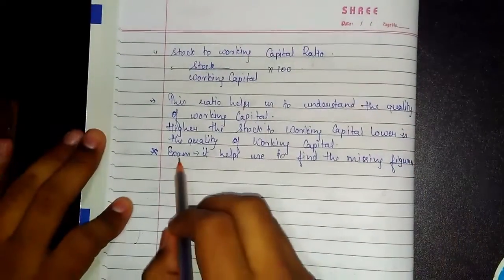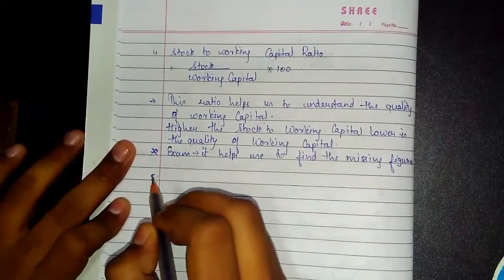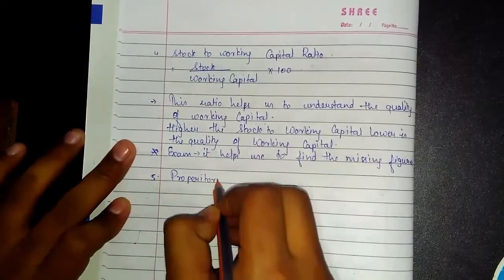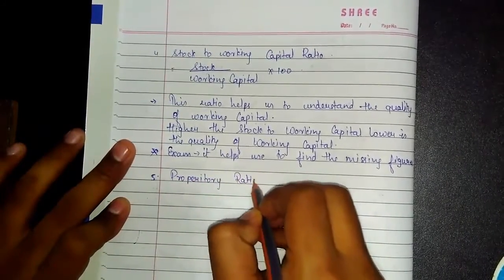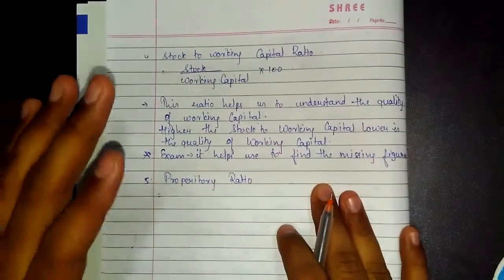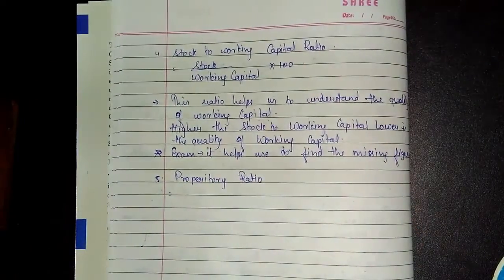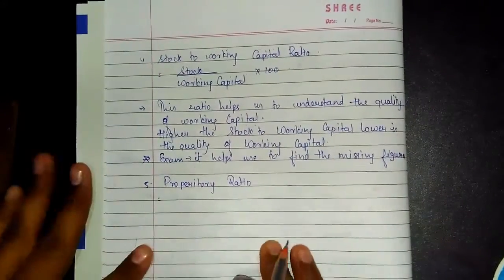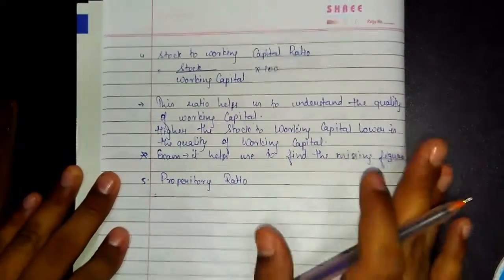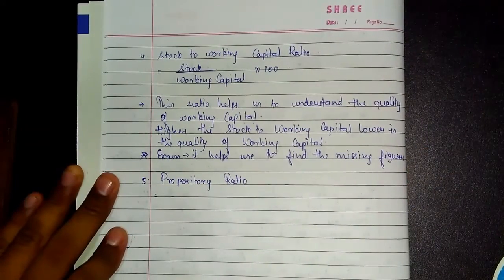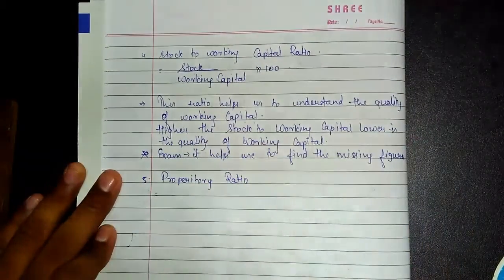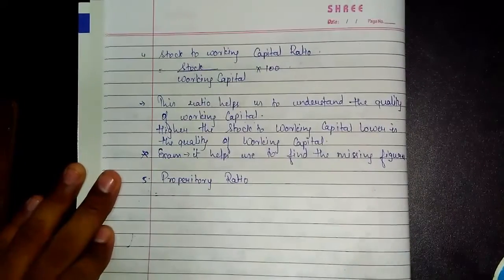The fifth formula is the Proprietary Ratio. Please write it in a good manner. A formula revision sheet will be provided before the exam, but please write this down now because all these explanations are worth more than that final sheet.